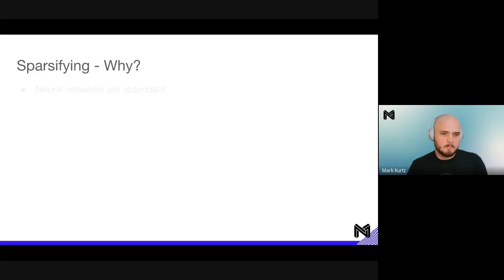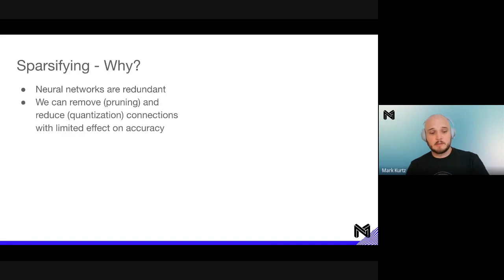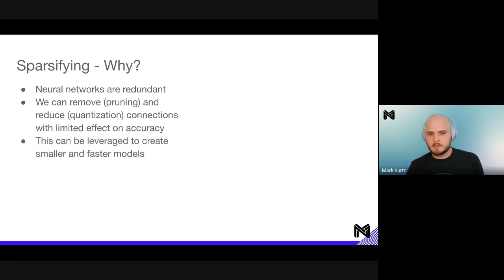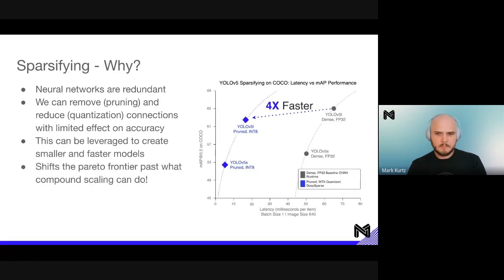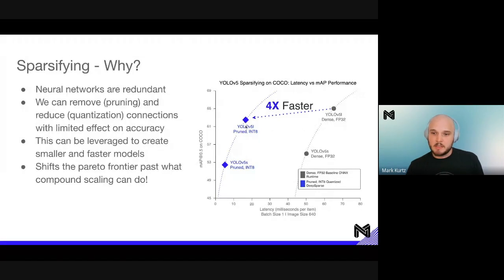Let's dive into why we would sparsify. Neural networks are redundant — we can remove (pruning) and reduce (quantization) connections within the network with limited effect on accuracy. After doing this, we can leverage this to create smaller and faster models, benefiting server deployments and edge deployments. This shifts the Pareto frontier beyond what compound scaling can do alone. We can see YOLO v5s and YOLO v5l on this Pareto curve of map versus latency, and by pruning and quantization we were able to shift the scale significantly — achieving 4x faster performance using Deep Sparse.